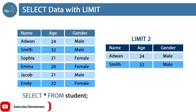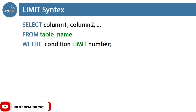First we need to type LIMIT, then we need to set the number — the exact number of how many results we want to extract from the student table. Let's talk about the syntax: how we can write the LIMIT clause in our query. First you type the SELECT command, then provide column names or use the star sign, then FROM table name. Then comes the WHERE clause — if you want, you can set any condition, otherwise you can skip it, it's optional. Then you need to use the LIMIT clause and provide the number of how many results you want to see.